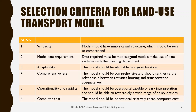The third criteria is adaptability — the model should be adaptable to a given location. The fourth is comprehensiveness — the model should synthesize the relationships between activities, housing, and transportation adequately. The fifth is operationality and rapidity — the model should be operational, capable of easy interpretation, and able to rapidly test a wide range of policy options. The sixth and last is computer cost — the model should be operational on relatively inexpensive computer systems.